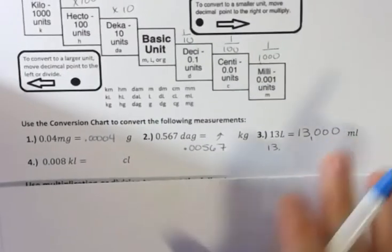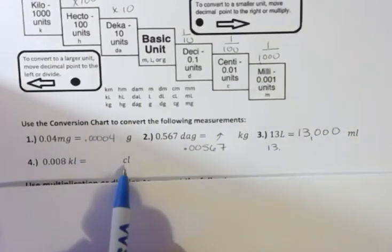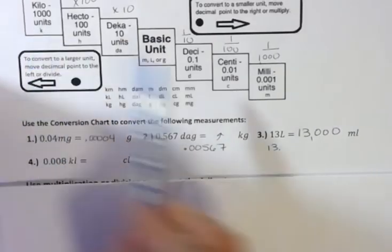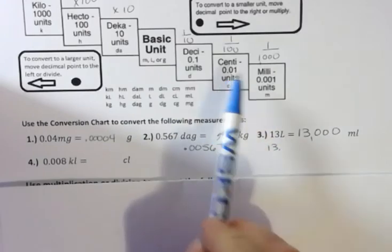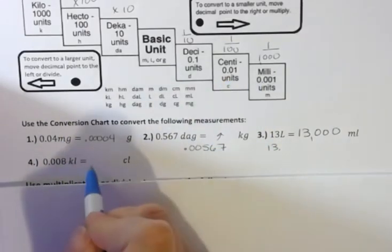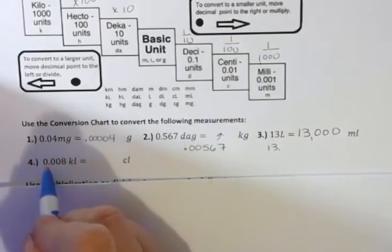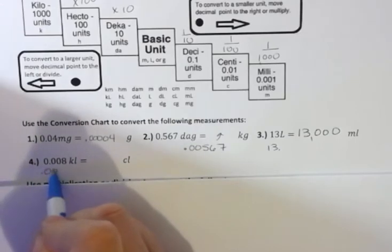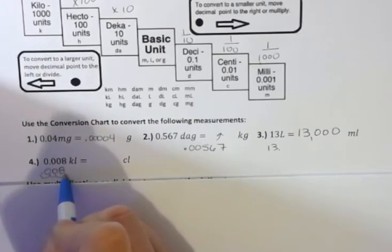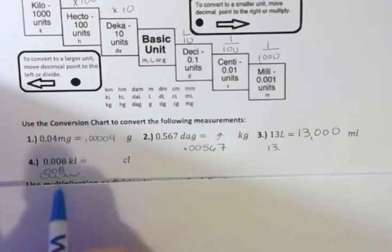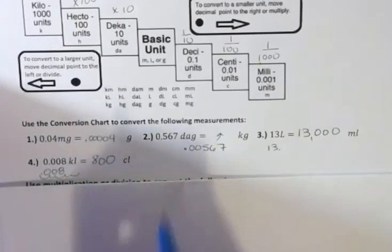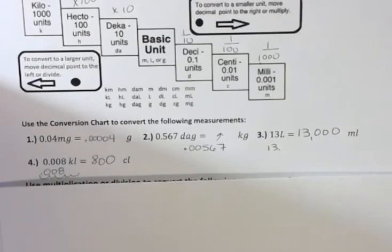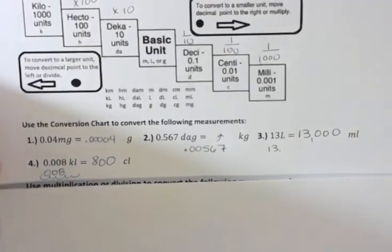Then here we have kiloliters to centiliters. From kilo to centi is one, two, three, four, five steps to the right, so I'm going to move that five places. Starting here, I'm going one, two, three, four, five, and I don't have to write the zeros in the front. That's going to leave me eight hundred centiliters. That's just using that chart and moving the decimal.